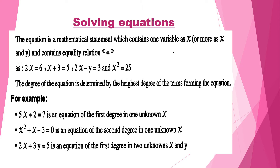The degree of an equation is determined by the highest degree of the terms forming the equation. For example, 5x plus 2 equals 7 is of the first degree because the highest power of variable x is 1. Also, x squared plus x minus 3 equals 0 is of second degree because the highest power is 2 for the unknown x. And 2x plus 3y equals 5 is an equation of the first degree because both unknowns x and y have power 1.